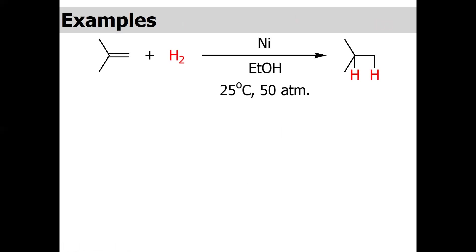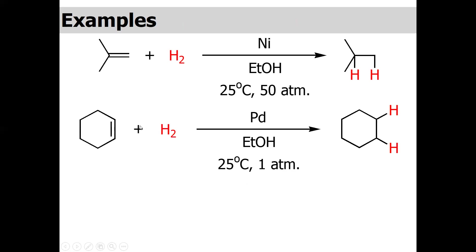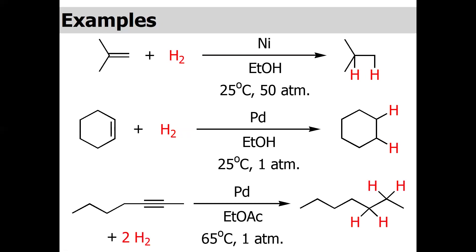Let's see some examples. For example, you have a cyclic compound with one pi bond, so one mole of hydrogen is used. You will get the corresponding cycloalkane, which is cyclohexane. In the alkyne case, you have two pi bonds, so two moles of hydrogen are used to give the corresponding alkane. There are different methods by which you can synthesize alkanes from alkynes or alkenes.